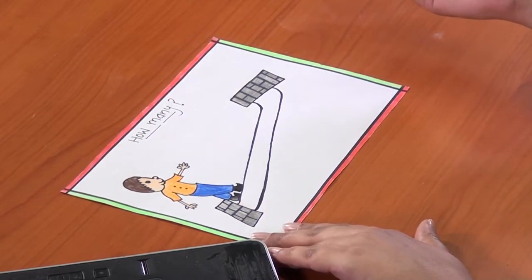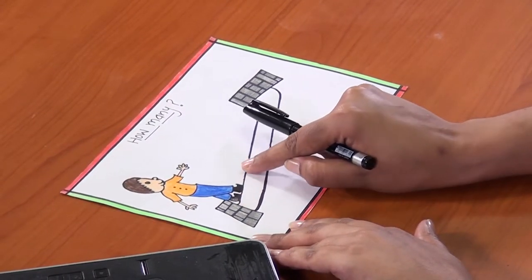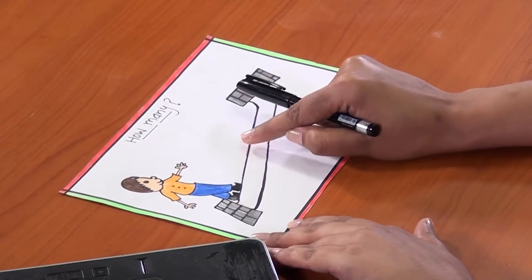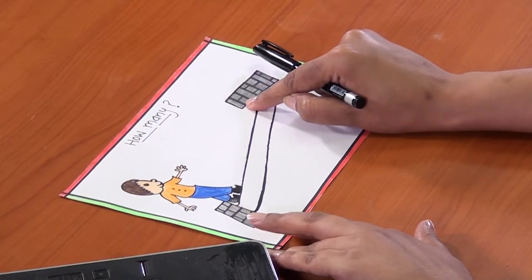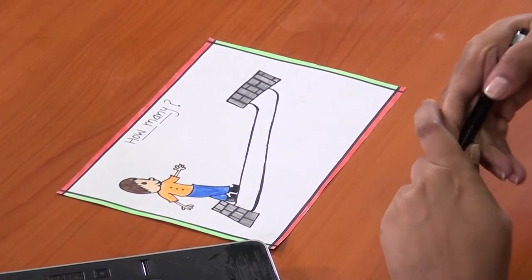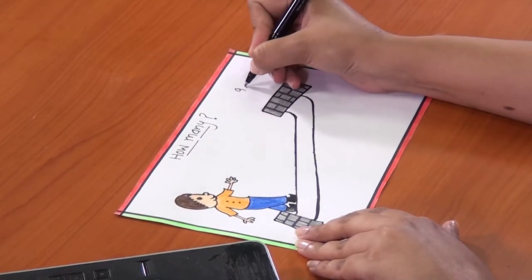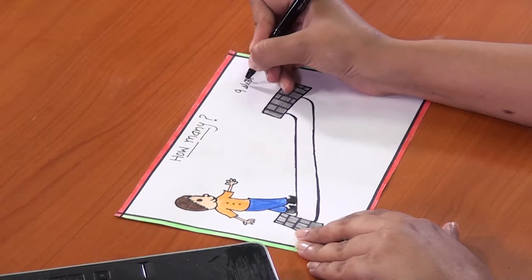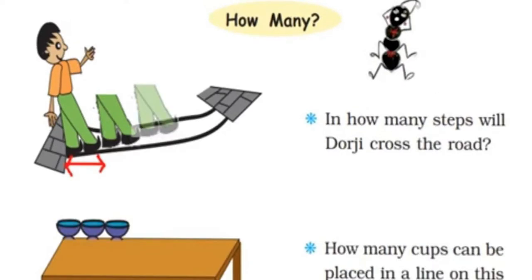You can use your fingers like this to count: one, two, three, four, five, six, seven, eight, nine, ten. We can see here that Dorji takes about eight steps to cross the rope.